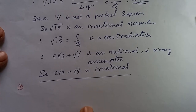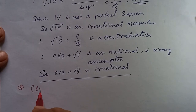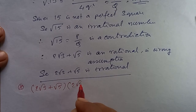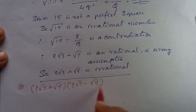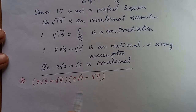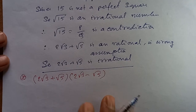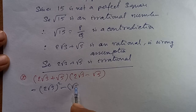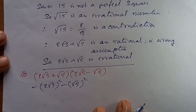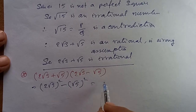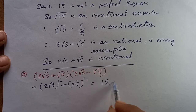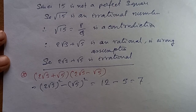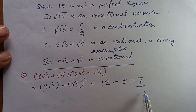For the next part: 2√3 plus √5 into 2√3 minus √5. Using the identity (a + b)(a - b) = a² minus b², this equals 2√3 whole square minus √5 whole square, which is 4 into 3 minus 5, equal to 12 minus 5, equal to 7. This is a rational number.